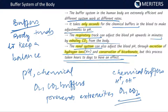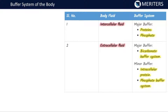Buffers prevent excessive movement of oxygen and excessive absorption of carbon dioxide — they maintain balance in your body. Chemical buffers take only seconds; respiratory buffers take a few minutes; and renal buffers take hours to days. Cells have intracellular and extracellular fluid. In intracellular fluid, the buffers are proteins and phosphate buffers. In extracellular fluid, the major buffer is the bicarbonate buffer system.